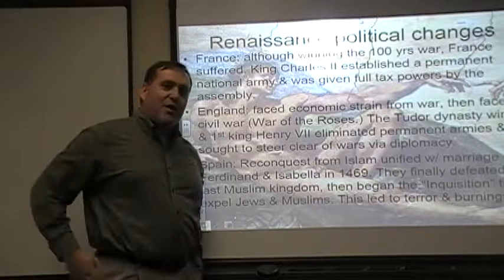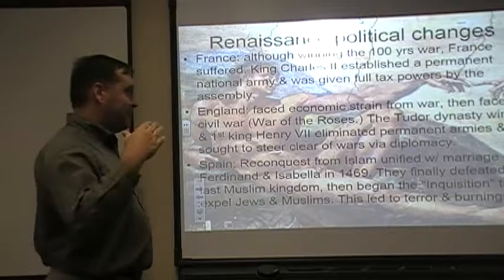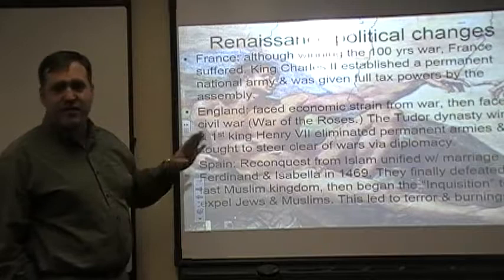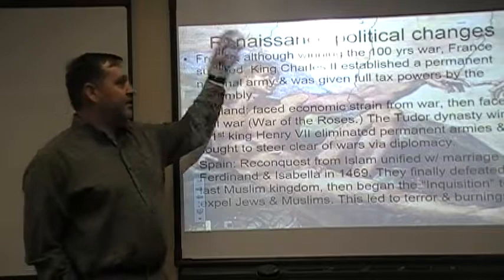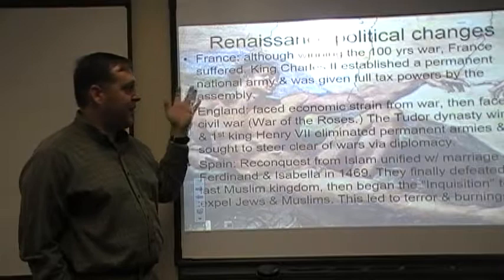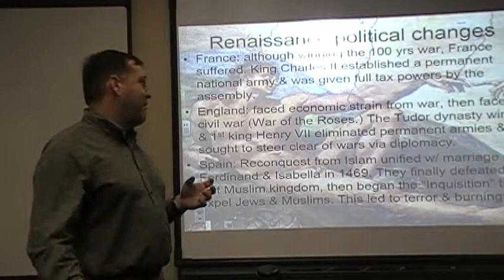There are a number of important political changes that take place during the Renaissance period that we sometimes lose track of amid all the art and intellectual discussion. In terms of France, it's coming out of winning the Hundred Years' War — though France actually suffers a lot since most of the war was fought on French soil. Charles VII gets to be king, establishes a permanent national army — which eventually becomes a pretty big drain on resources — and weasels his way into getting full tax powers from the assembly, something that will remain relatively dormant until the late 1700s when we'll see a king with his head cut off.